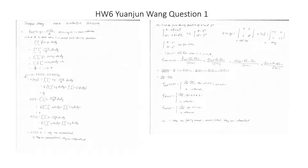So E[XY] equals the integral from negative one to one of the integral from negative one to one of x times y times (1 + xy)/4 dx dy. We can split the calculation: the integral of xy/4 dx dy plus the integral of x²y²/4 dx dy, which gives us 1/9.